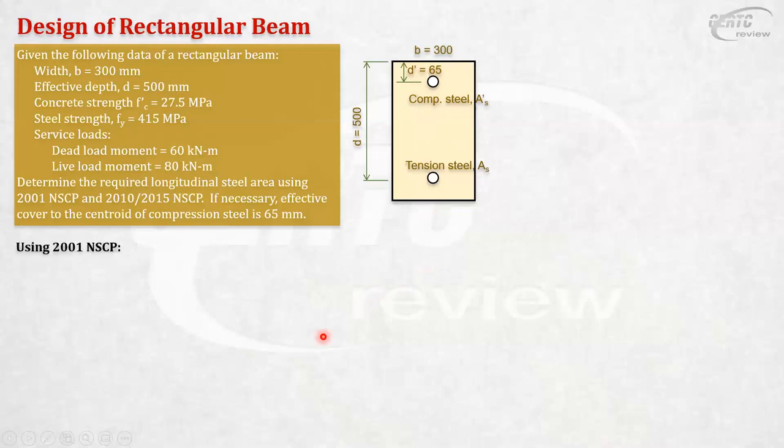Alright. Let's start with the 2001 NSCP. In 2001 NSCP, the reduction factor is constant. It is always 0.9. No matter if it is over-reinforced, under-reinforced, or balanced, whatever condition, 0.9. And then, our beta 1 is equal to 0.85, because our f'c prime does not exceed 30 MPa. Okay. And then, our rho balance, okay, this is the formula, that is based on the strain. 0.003 is the strain in concrete, and fy over Es is the strain in steel. By the way, the Es we are using is 200,000, that's why it became 600 MPa.